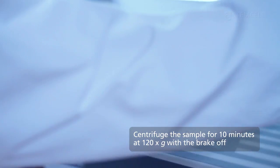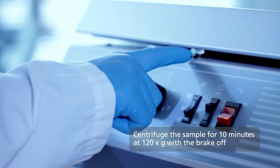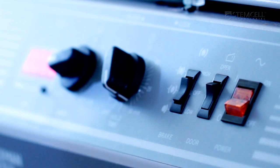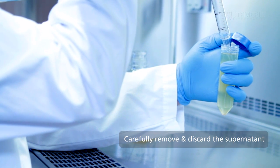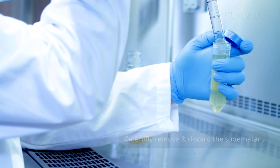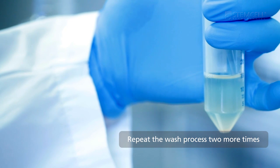Centrifuge the sample for 10 minutes at 120 G with the brake off. Carefully remove and discard the supernatant. Repeat the wash process 2 more times.